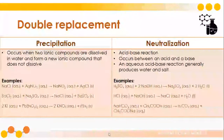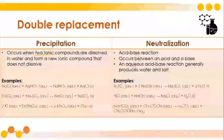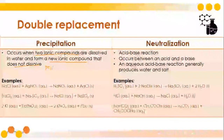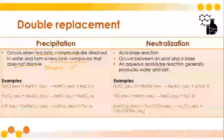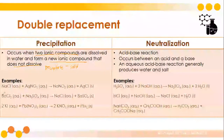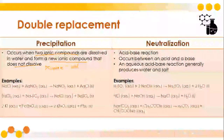During double displacement, there are two possible processes. First is precipitation. This occurs when two ionic compounds are dissolved in water and form a new ionic compound that does not dissolve — this is the precipitate. The precipitate is solid; it does not dissolve. For example, NaCl and silver nitrate will produce sodium nitrate and silver chloride — silver chloride will be your precipitate.